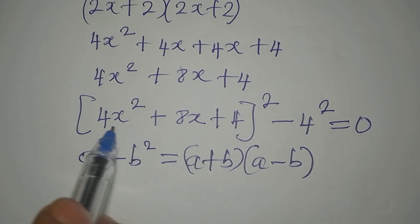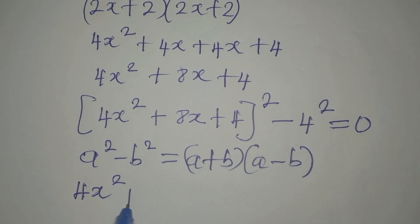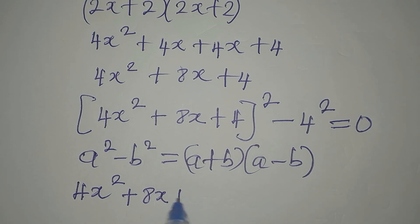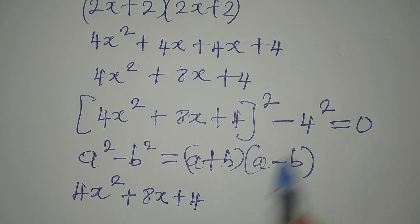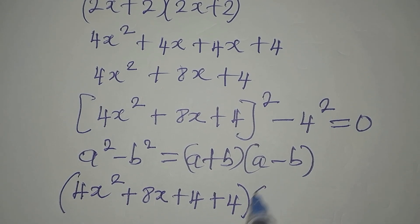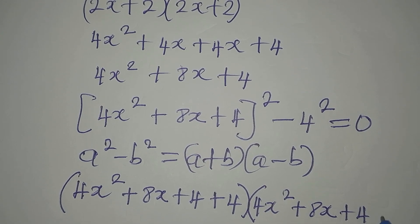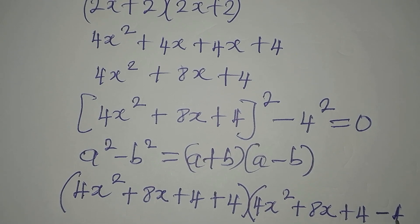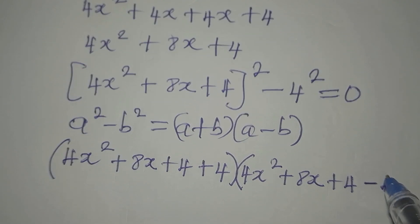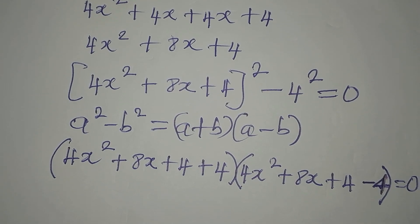I'm going to apply this right away. My 'a' is the whole expression (4x² + 8x + 4), and our 'b' is 4. So we write (4x² + 8x + 4 + 4) times (4x² + 8x + 4 - 4), all equal to zero.